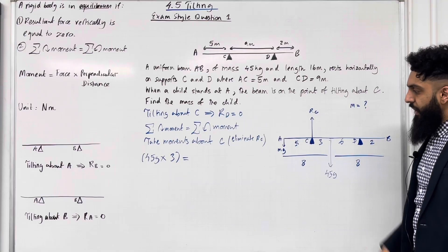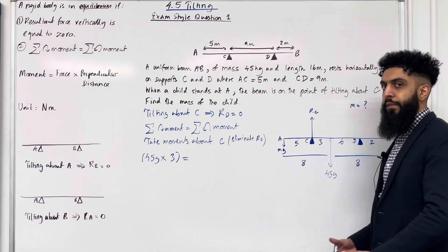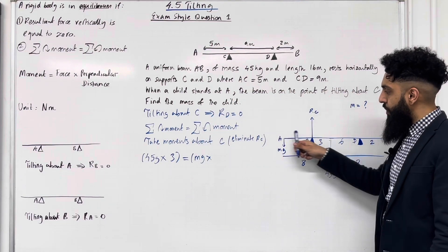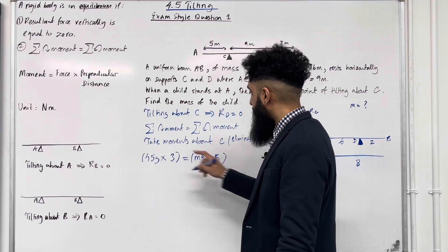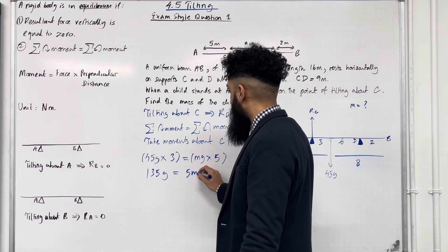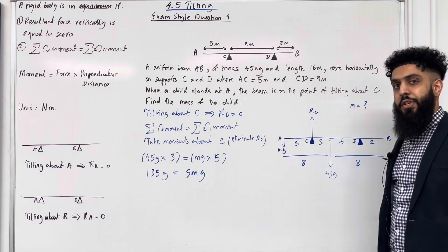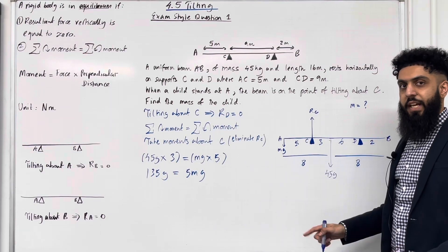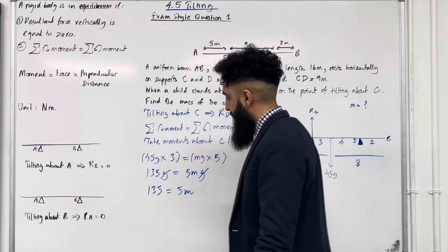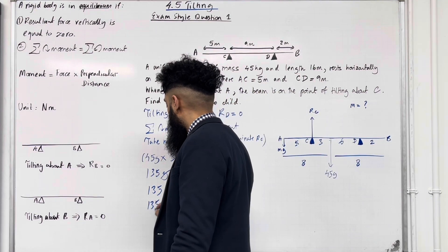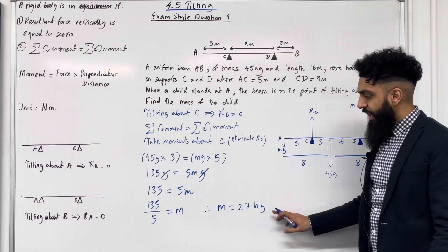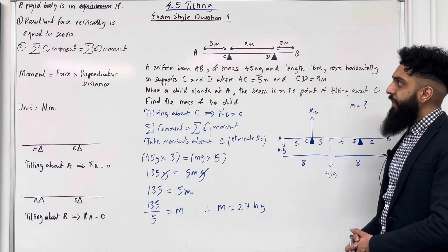This must equal the anticlockwise moment — the moment of the Mg force: Mg multiplied by the perpendicular distance from C, which is 5. So 45g × 3 = 135g, and Mg × 5 = 5Mg. Since g is common on both sides, we divide both sides by g, giving 135 = 5M. Therefore M = 135 ÷ 5 = 27 kg. That is the mass of the child. This completes exam style question 1.